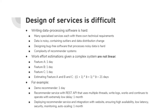A final word on work effort estimation with complex systems: estimates are often non-linear. If feature A, B, and C each take one day of work independently, having all three together might take not 3 but closer to 21 days. For example, feature A might be basic recommendation functionality, feature B is making it secure, and feature C is achieving sub-200 millisecond response time.